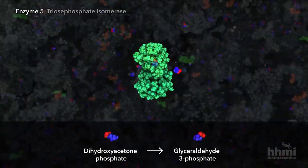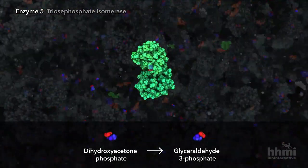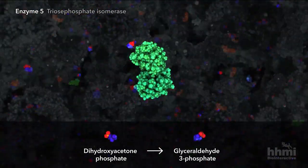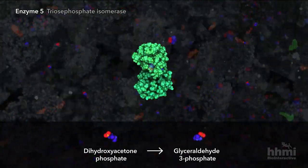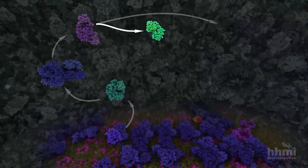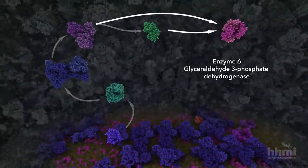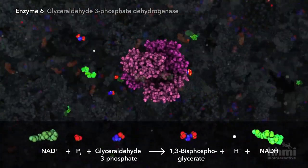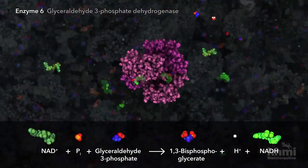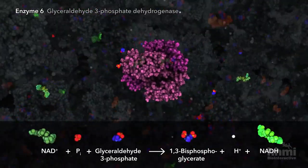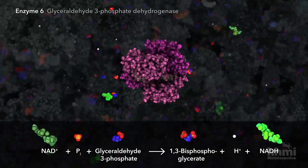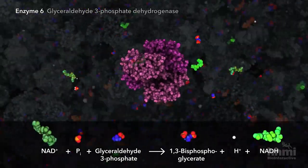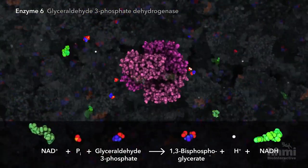The sugar isomer, dihydroxyacetone phosphate, must first be converted through isomerization before continuing to the sixth enzyme. The sixth enzyme adds a second phosphate to glyceraldehyde-3-phosphate, creating 1,3-bisphosphoglycerate, while two electrons are transferred to NAD+, which is reduced to NADH.